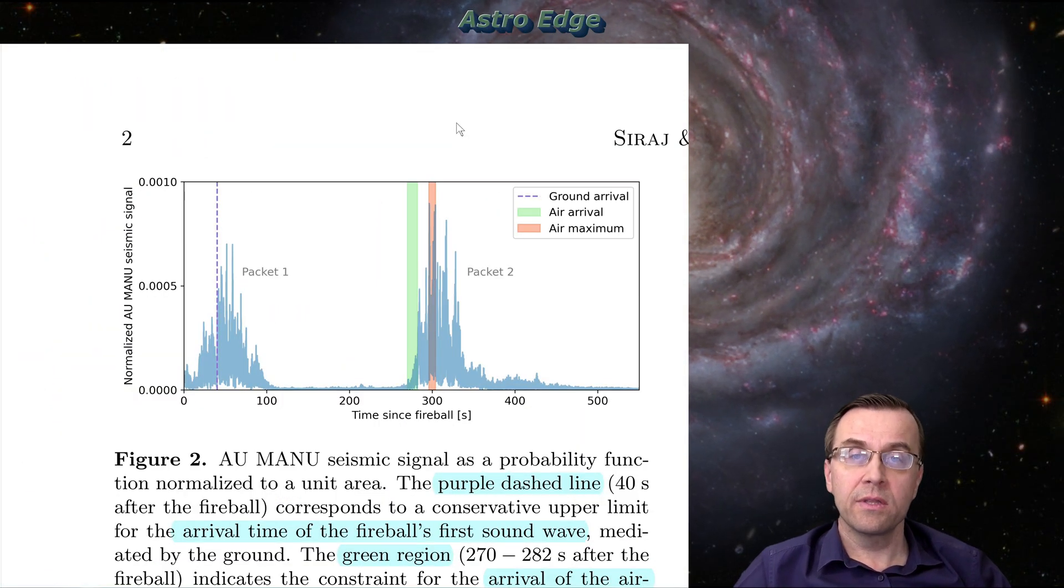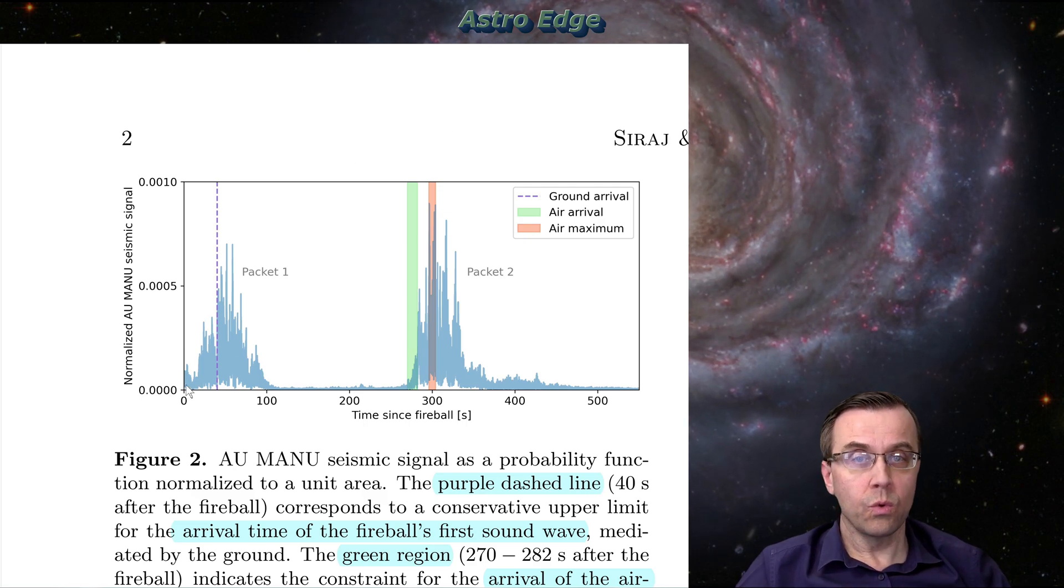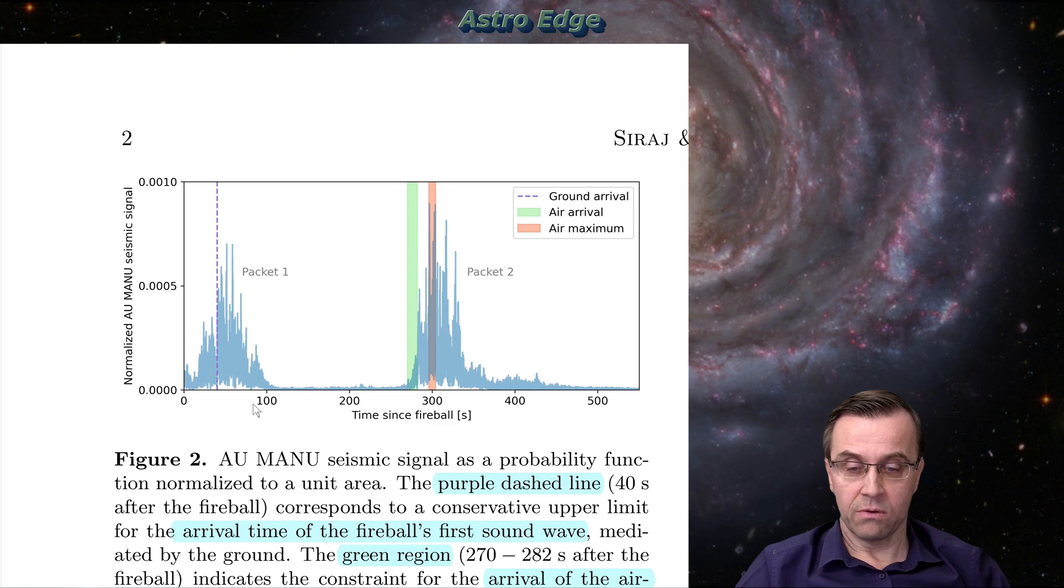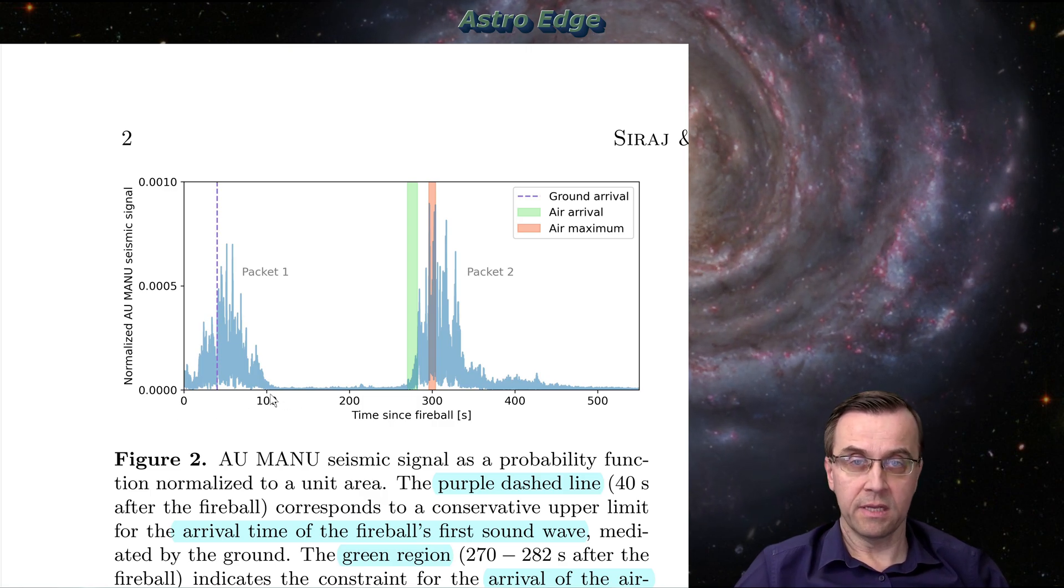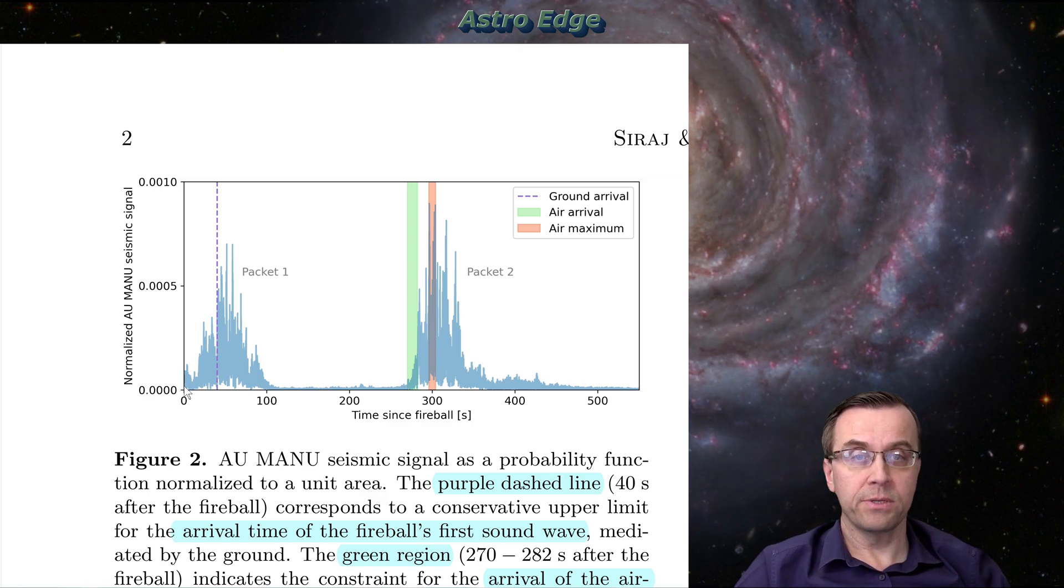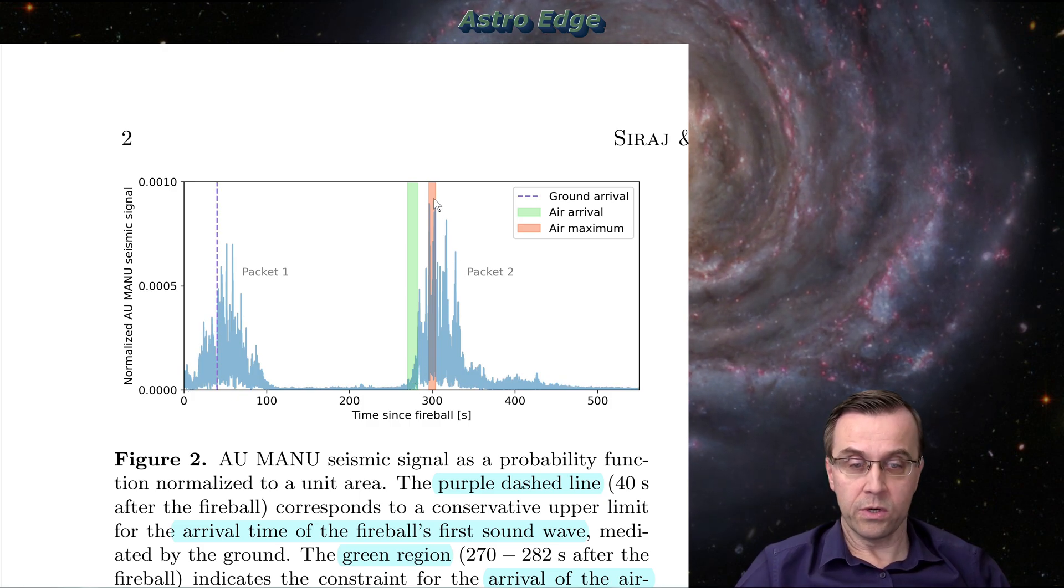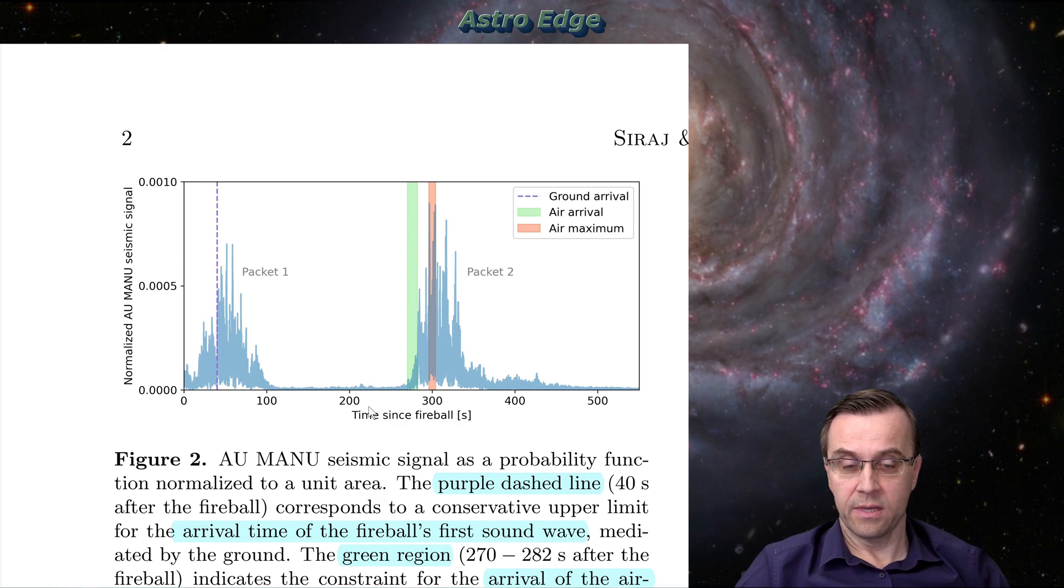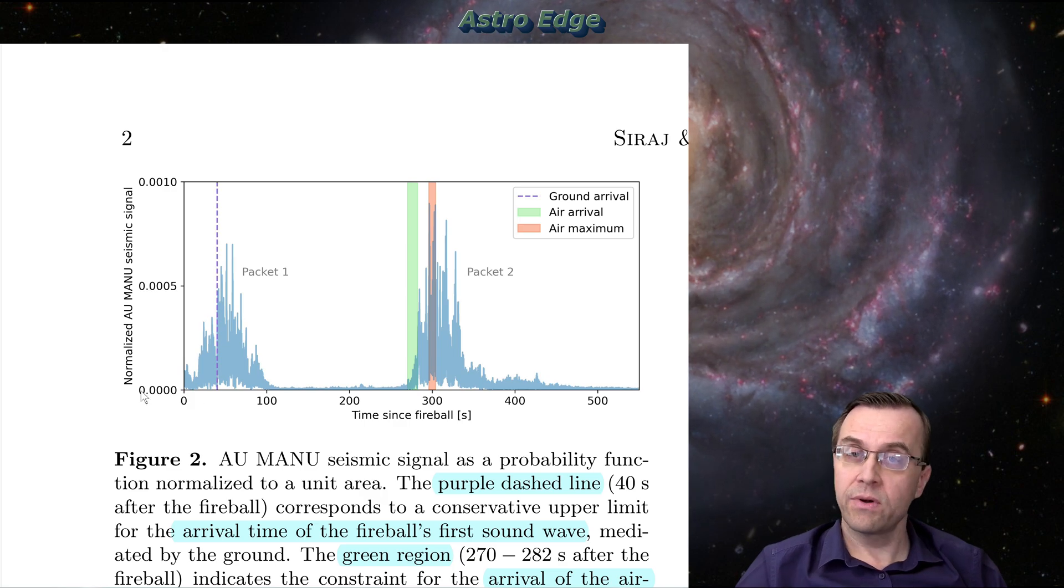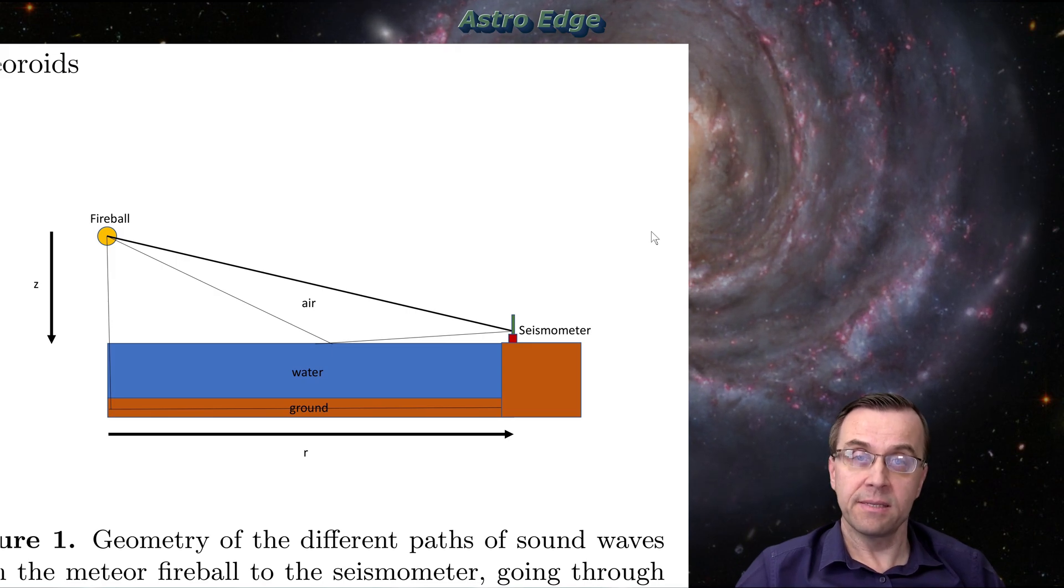So this is what this seismic sensor recorded around that time. It recorded two main events. Here's the first event, and pay attention, here are seconds. So first boom, explosion boom lasted around 100 seconds, and moment zero corresponds to the time when the optical explosion, the flash was detected. And then there was a second echo, which was actually slightly louder than the first one, and which happened 300 seconds or five minutes after the explosion. So why are there two booms recorded from a single explosion?